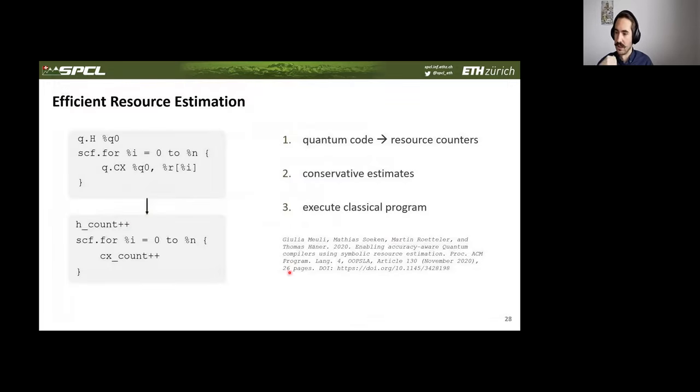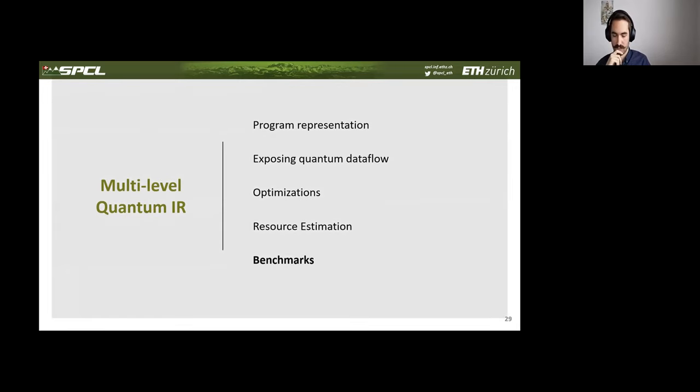We also implemented a prototype resource estimation routine. In other frameworks, you generate this whole circuit and then you would count the gates that appear in the circuit. Resource estimation is useful for quantum computing because you may want to know in advance how much resources your program is going to require when you run it on expensive quantum hardware. So what we do is we simply replace the quantum instructions by counters. For every gate type, there's a counter. When you execute this purely classical program, it spits out all the counters for the different resources.